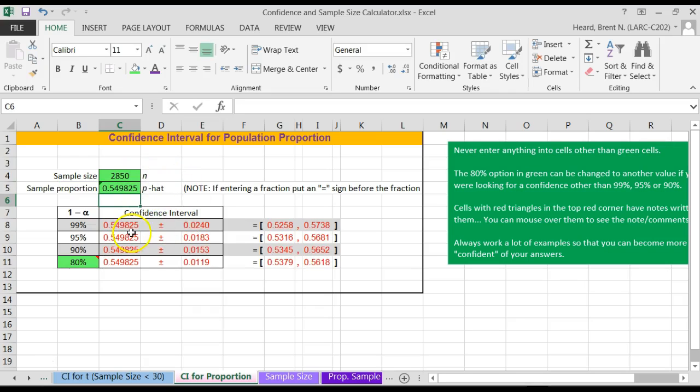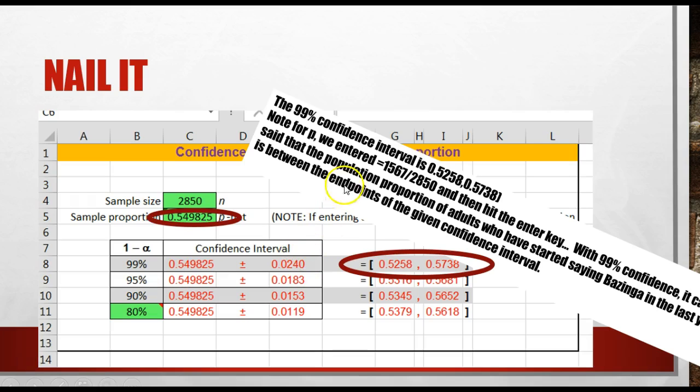What do they want? The 99% confidence interval? There it is. 0.5258 to 0.5738. Tell me to how many digits you would like me to round it to. We just nailed this one.